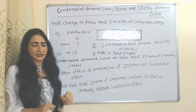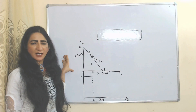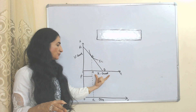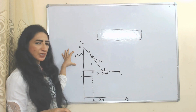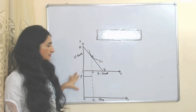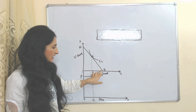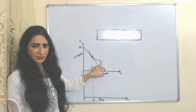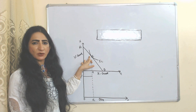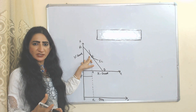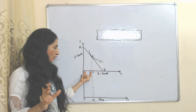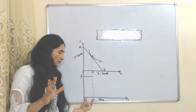Now, step by step, we will see how to derive a compensated demand curve. On the horizontal axis we have the quantity of good X, on the vertical axis we have good Y, and here we have price. The initial budget line is AB, and the initial indifference curve is IC. Point E is the initial consumer equilibrium, where the budget line is tangent to the indifference curve, and the initial quantity of good X is OX.